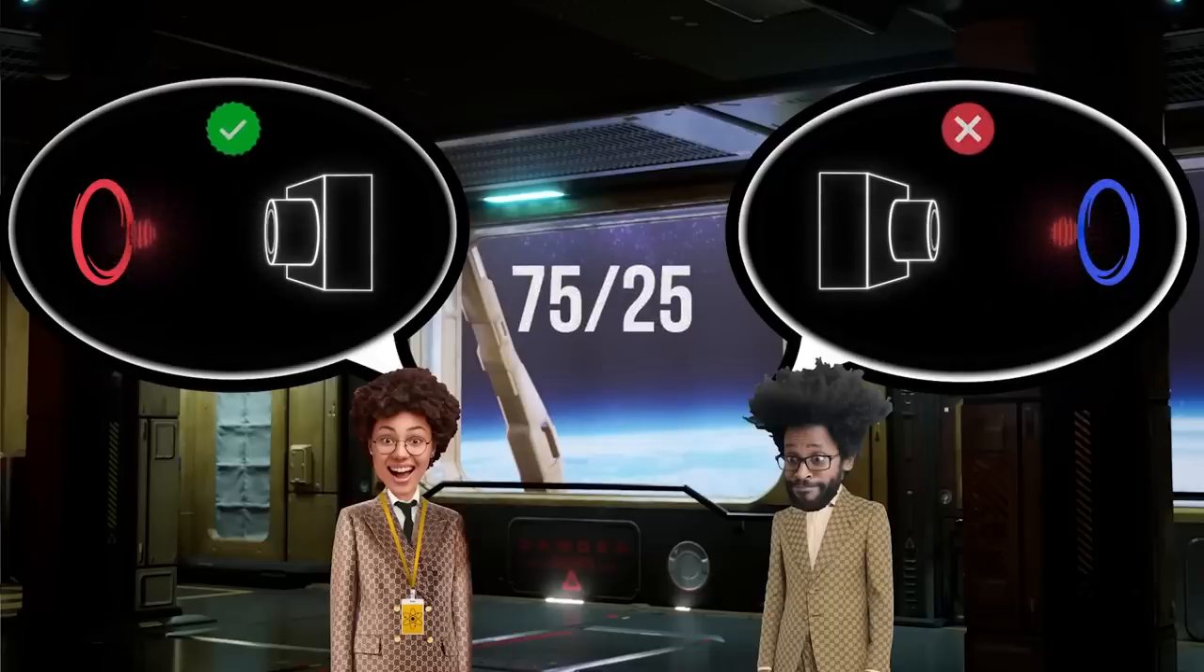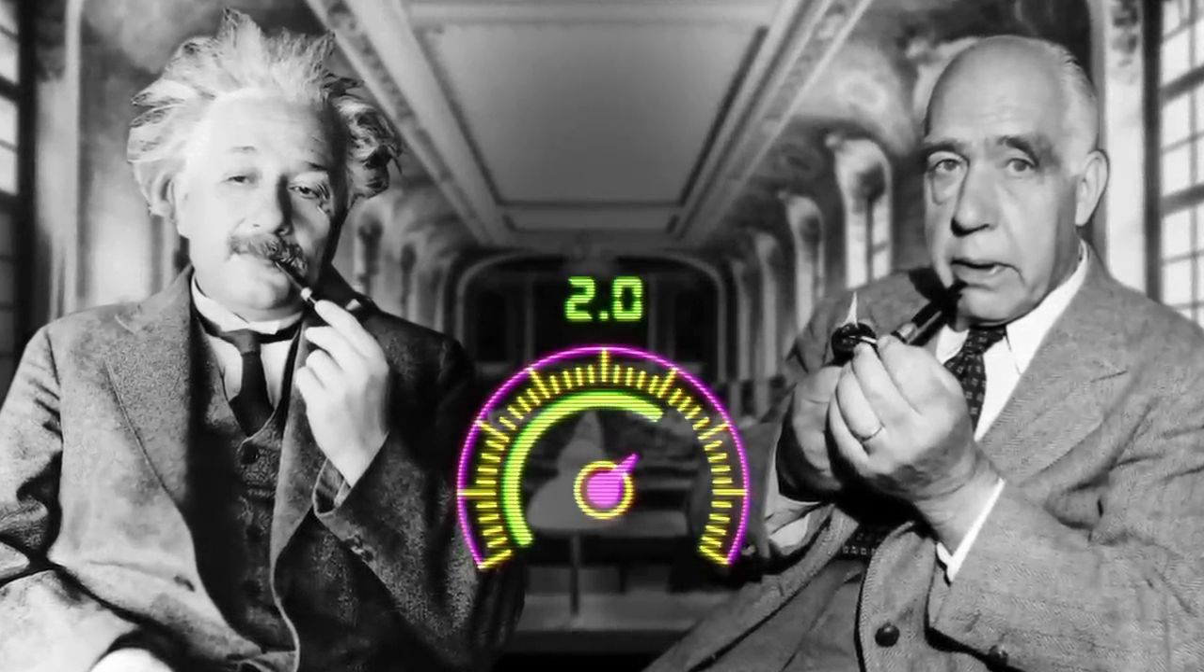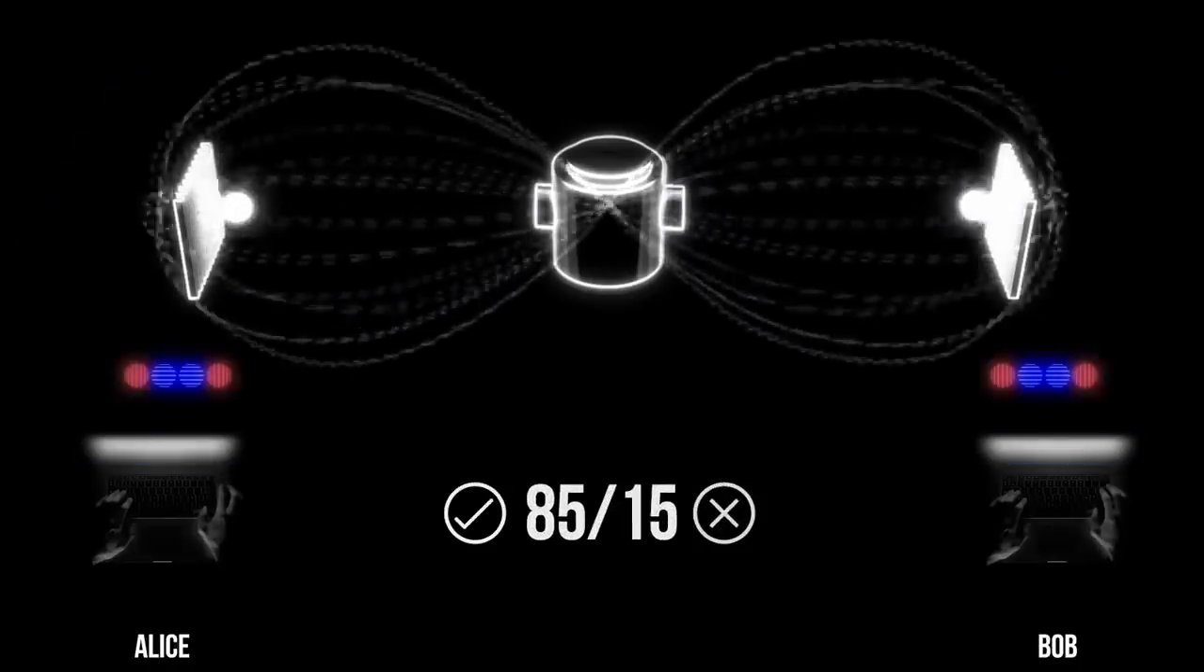According to Bell's calculations, if Einstein was right and particles did hide their values from the beginning, Alice and Bob would agree in 75% of cases at most. But if Niels Bohr was right, and the universe doesn't know particles' spin states until the last moment, Alice and Bob's results in further iterations will match in 85% of cases.